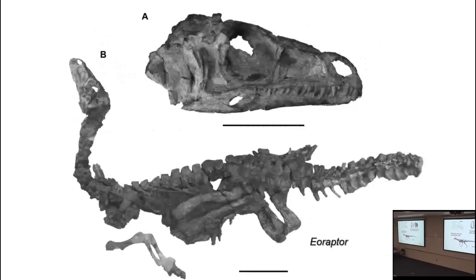One of the earliest and best-known basal sauropodomorphs is Eoraptor, the 'dawn thief.' When initially discovered it was thought to be a carnivorous dinosaur — it probably was omnivorous — but that was due to a misinterpretation, partly confusing it with another dinosaur that occurred in the same formation.